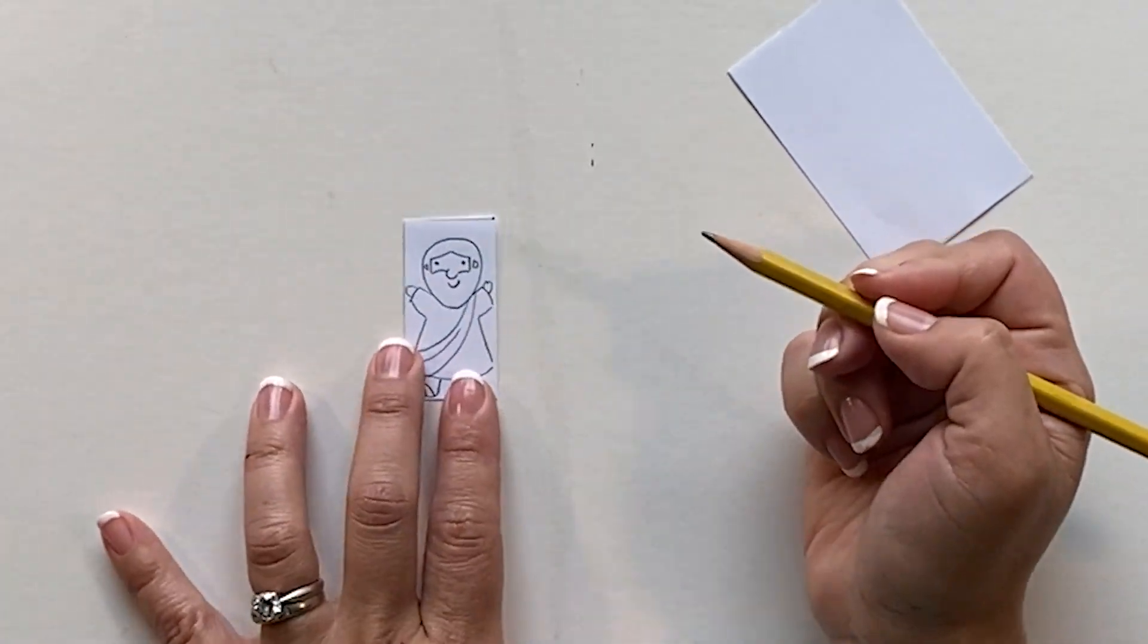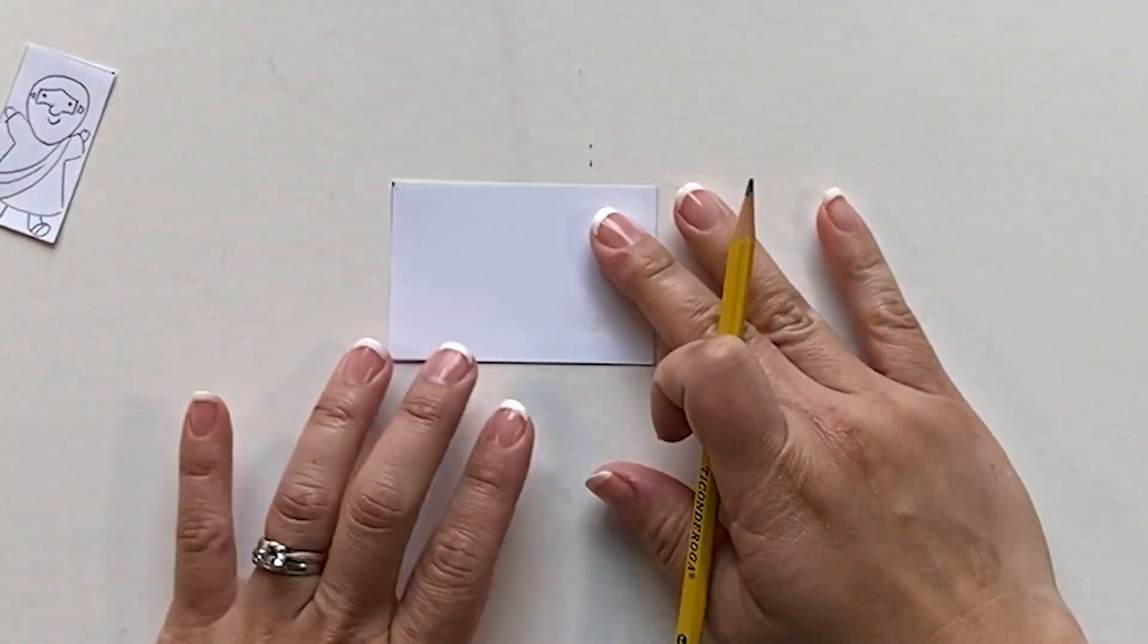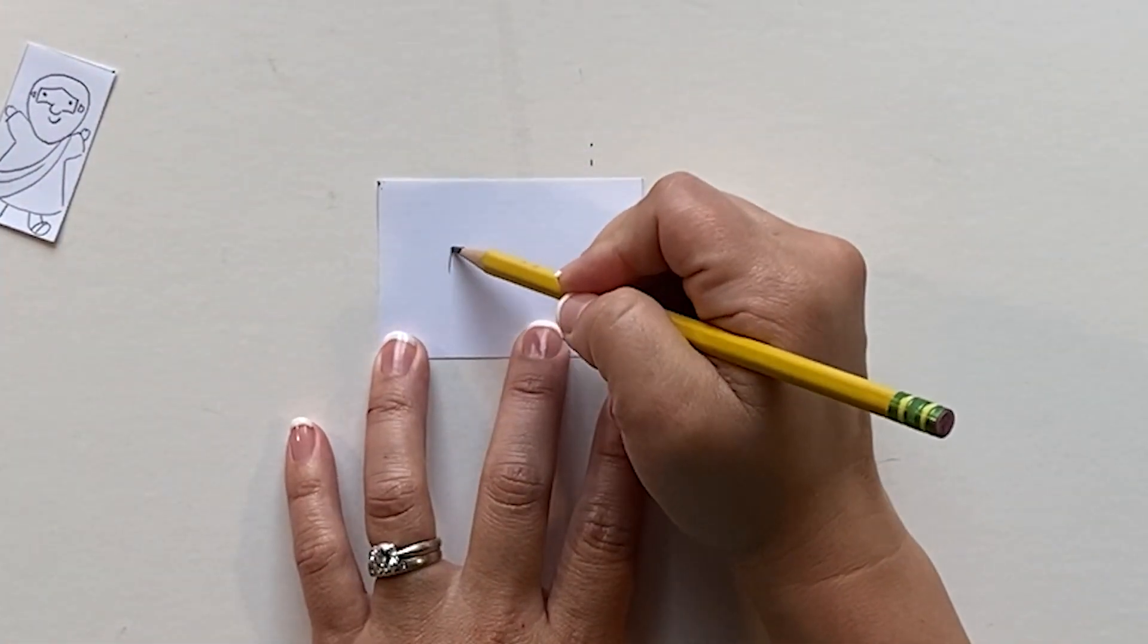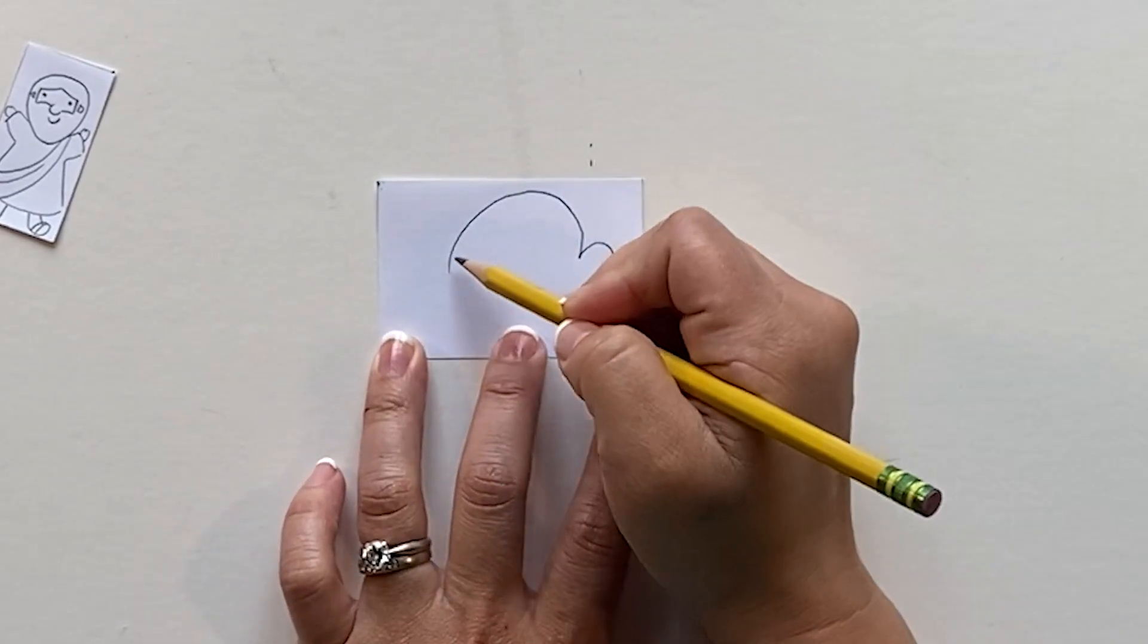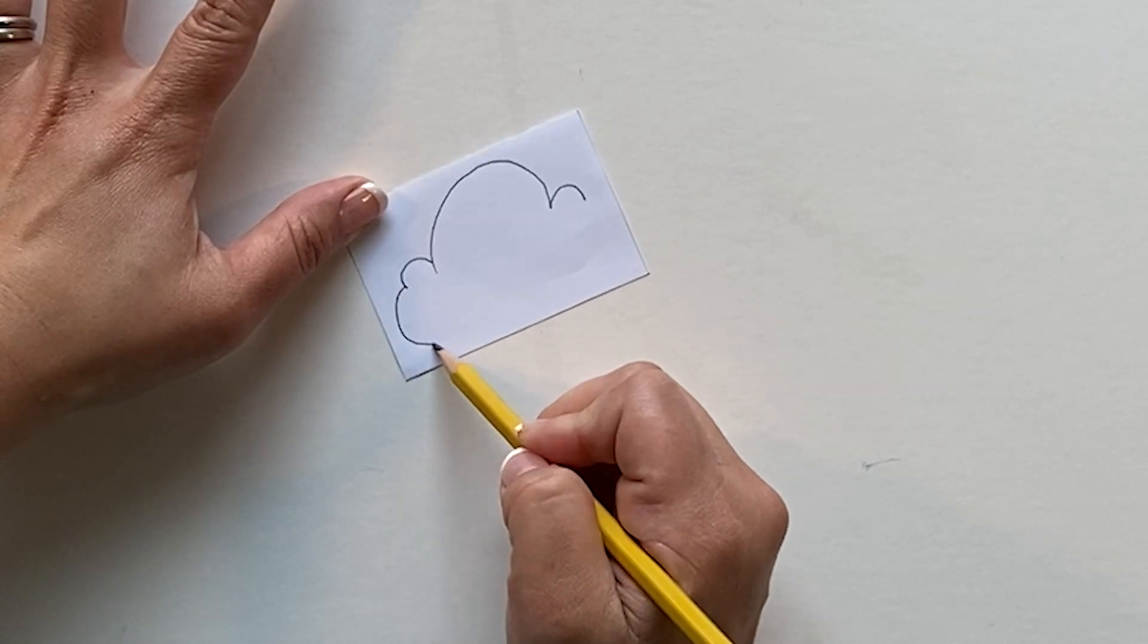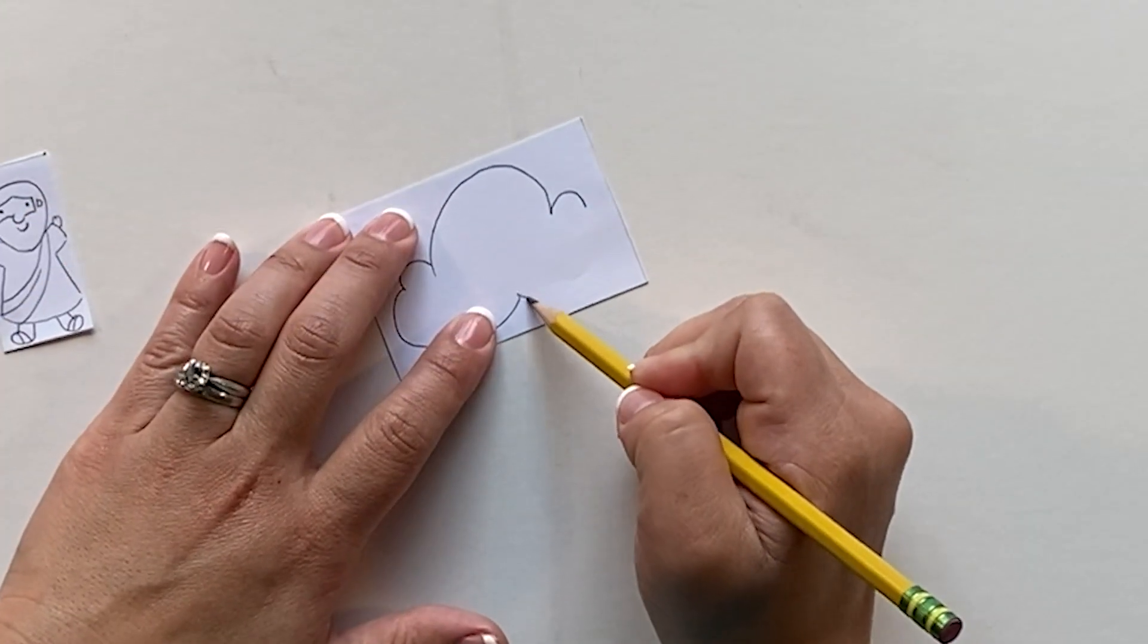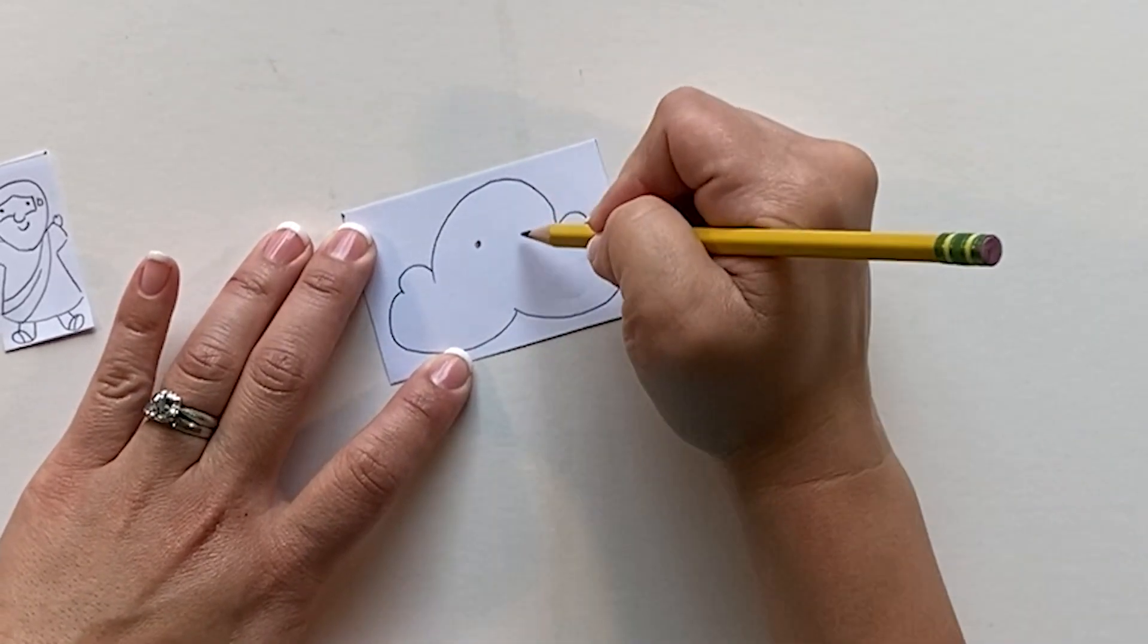And there's Jesus. That's for the little piece, the little rectangle. And then for the larger rectangle we're just going to make a nice cloud. Big one here, little one here, move it around. You can also give it a smiley face if you want.